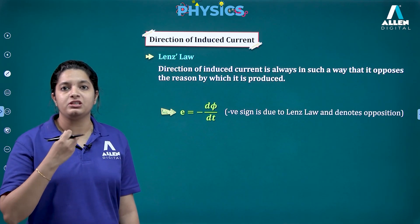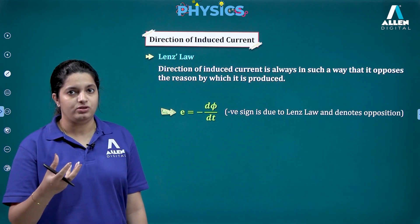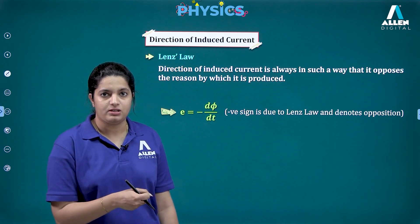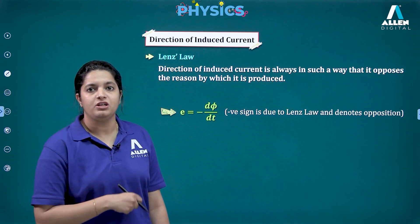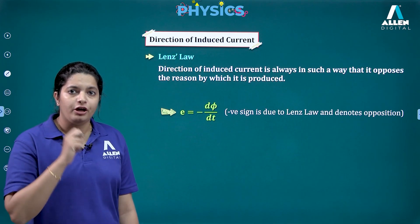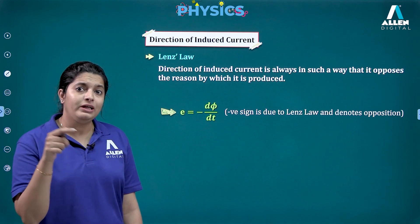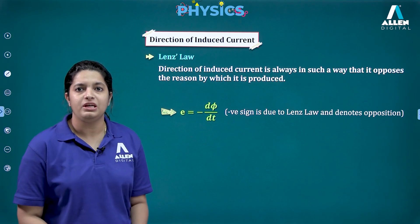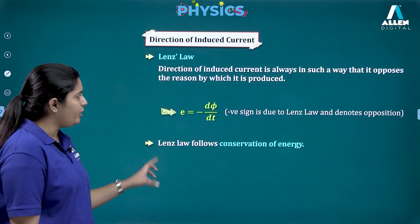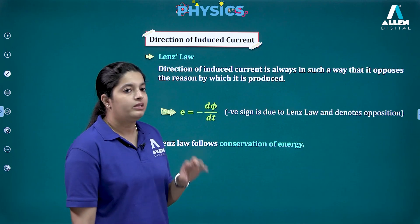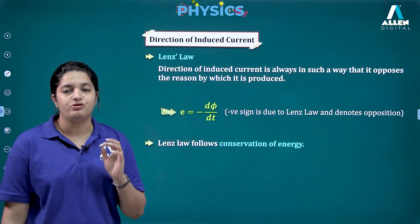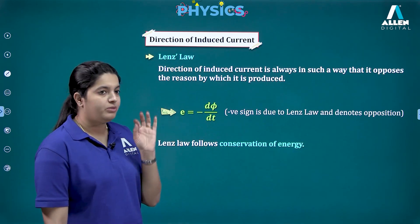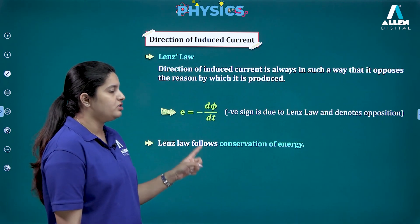In Lenz's law, whatever induced current is produced, it produces a magnetic field that opposes the change. If flux is increasing through the coil, the induced current reduces that flux by producing a magnetic field opposite to it. If the external flux is reducing, the induced current supports that flux since it cannot increase it on its own. Lenz's law is a consequence of conservation of energy.